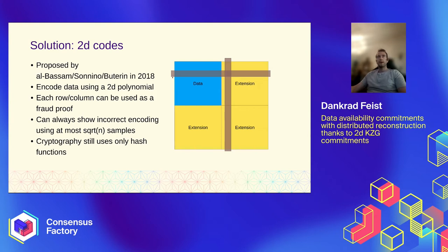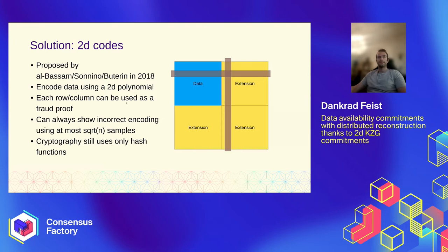The solution to that is to instead use 2D codes. You encode the data into a two-dimensional polynomial such that each row and each column is itself a one-dimensional low-degree polynomial. If there is any incorrect encoding anywhere, you can prove this by giving just the row or column where the mistake happened. The fraud proofs now become O(√N) of the data size instead of O(N). This was the first practically efficient data availability scheme, and it was proposed by Albassam, Al-Bassam, Sonnino, and Buterin in 2018. It can be constructed using just Merkle trees.